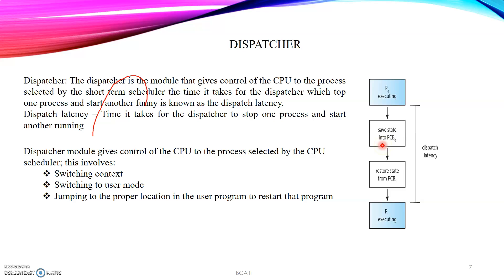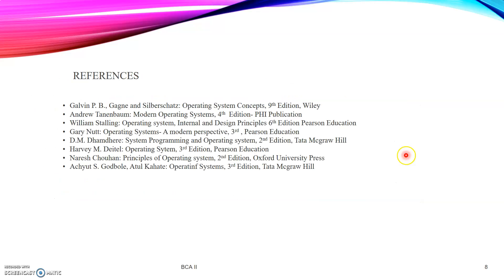The dispatcher module gives control of the CPU to the processes selected by the CPU scheduler. This can be done by switching of context, switching to user mode, and jumping to the proper location in the program. In later classes we will discuss scheduling philosophies including preemptive and non-preemptive scheduling. Thank you for patiently watching this video.